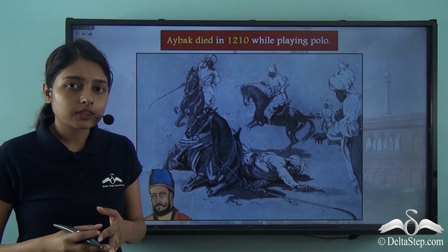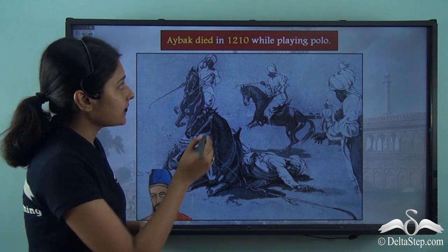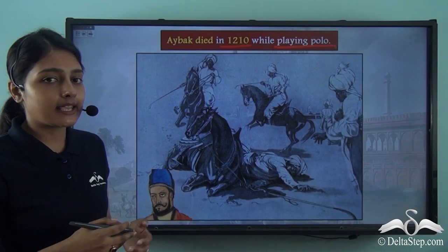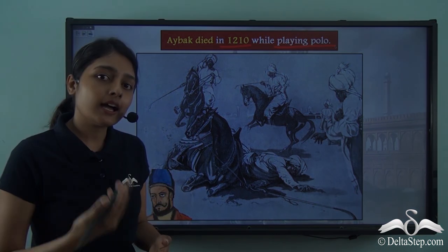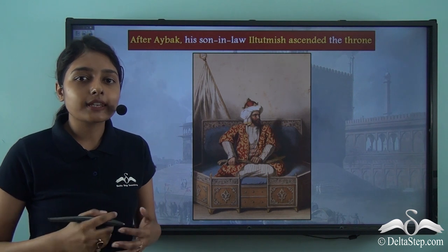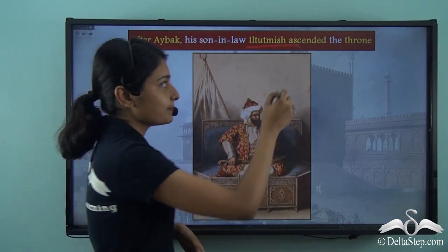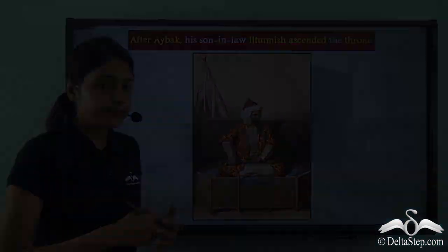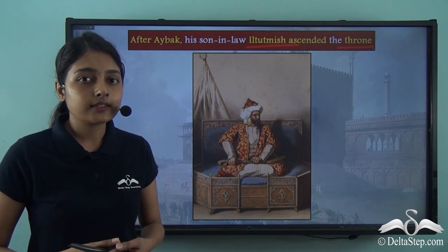This generous Sultan who was also very fond of art and architecture very unfortunately died in 1210 while playing polo. While Qutubuddin Aibak was playing this game, he fell from the back of his horse and died, bringing an end to his reign. After Qutubuddin Aibak died in 1210, his son-in-law Iltutmish came to the throne. It is the rule of Iltutmish under the slave dynasty that we will be discussing in our subsequent lesson.